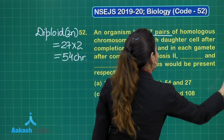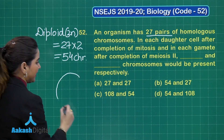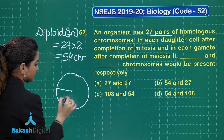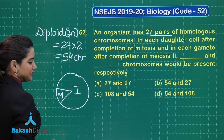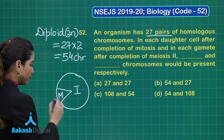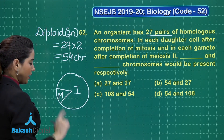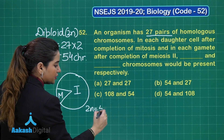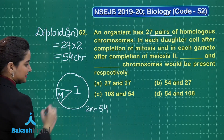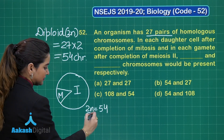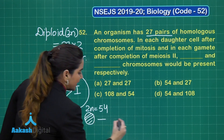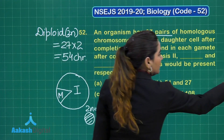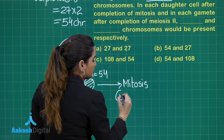To understand this, we can make a simple diagram representing the cell cycle, with an M phase and an interphase (I phase). M phase can be of two types: mitosis or meiosis. During interphase, 2N = 54. If this cell undergoes M phase as mitosis, the number of chromosomes remains equal — which is why mitosis is called equational division.